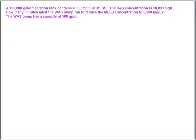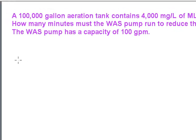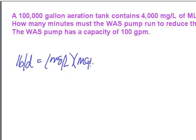The pounds formula: pounds per day is milligrams per liter times million gallons per day, or in this case million gallons of aeration basin, times 8.34.